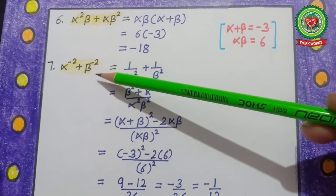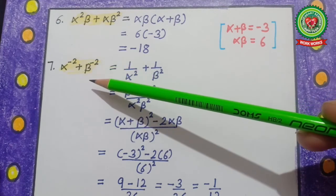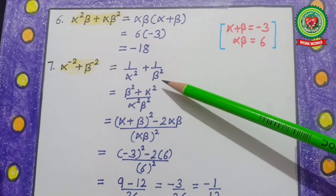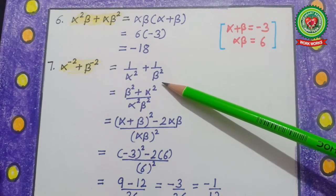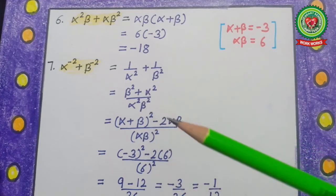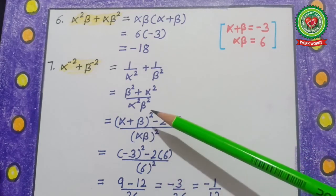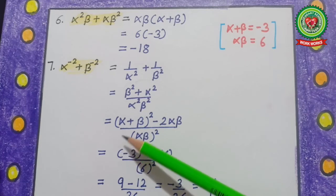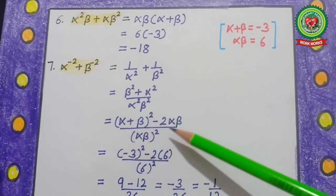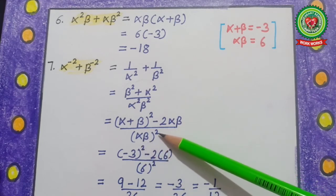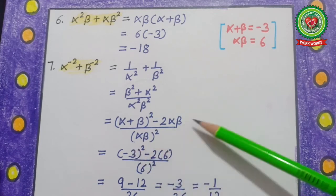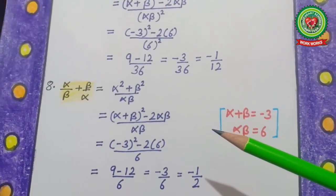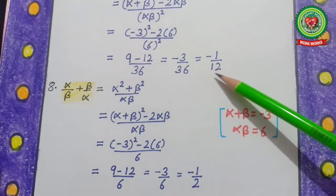Question number 7: α⁻²+β⁻² = 1/α²+1/β². After taking LCM, the value is (β²+α²)/(α²β²). This is in the form of the formula for α²+β², so applying it gives: [(α+β)²−2αβ]/(αβ)². After filling in the values of α+β and αβ and solving, our answer is −1/12.